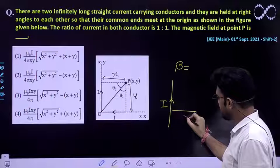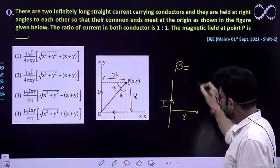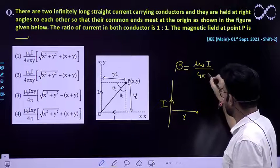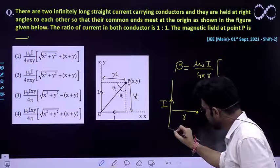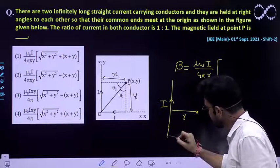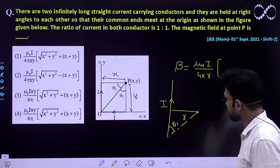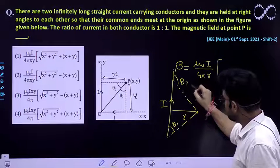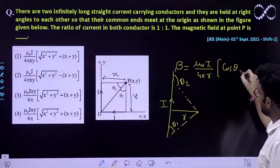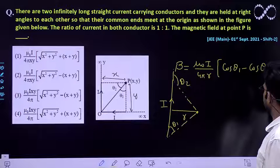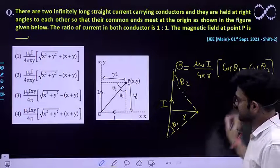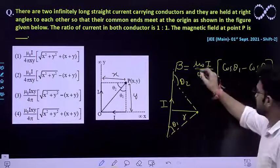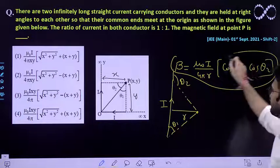If this is a current-carrying conductor whose current is I, then at a certain distance R from it the magnetic field is given by the expression we already know: B = μ₀I / (4πR) × (cos θ₁ − cos θ₂), where θ₁ and θ₂ are the angles at the two ends of the conductor. Knowing this expression, we can now easily find the magnetic field because of each wire.